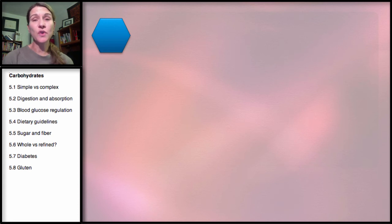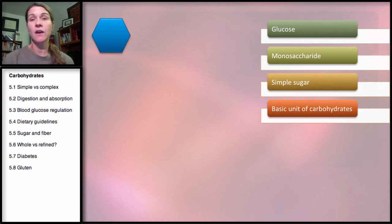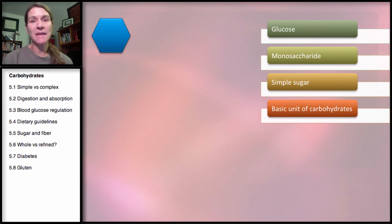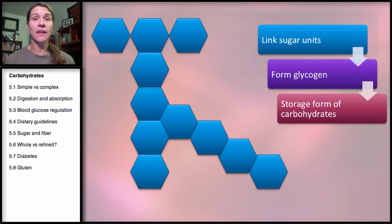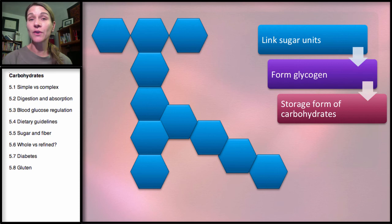We start with glucose — this is the one sugar unit, a monosaccharide, a simple sugar. This is the basic unit of carbohydrates. It's in all of our carbohydrates: lactose, maltose, sucrose, starch, fiber, and glycogen. When we take in glucose, we are going to link these together to form glycogen — our storage form of carbohydrates. We store glycogen in the liver and in the muscle.